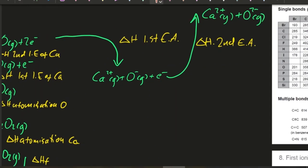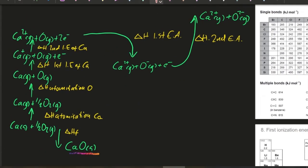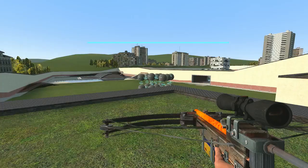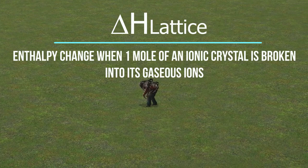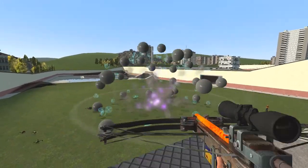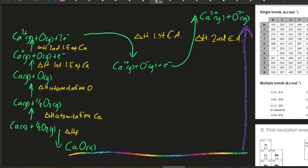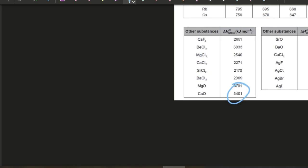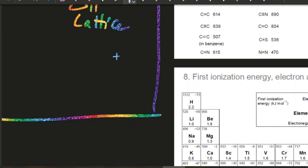We've got one more arrow to put in, going all the way from calcium oxide at the bottom up to the gaseous ions — that's the lattice energy: one mole of ionic crystal being converted into its gaseous ions. Let's put the numbers in. The lattice energy of calcium oxide is 3401 kJ/mol. Lattice energy can go up or down, but by tradition in IB we put it going up, so it's a positive number.